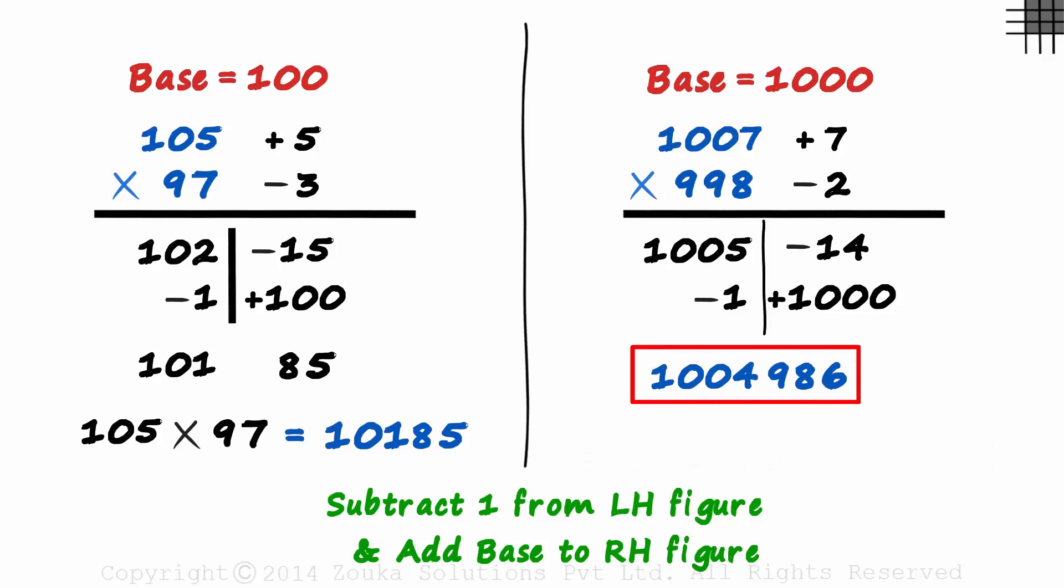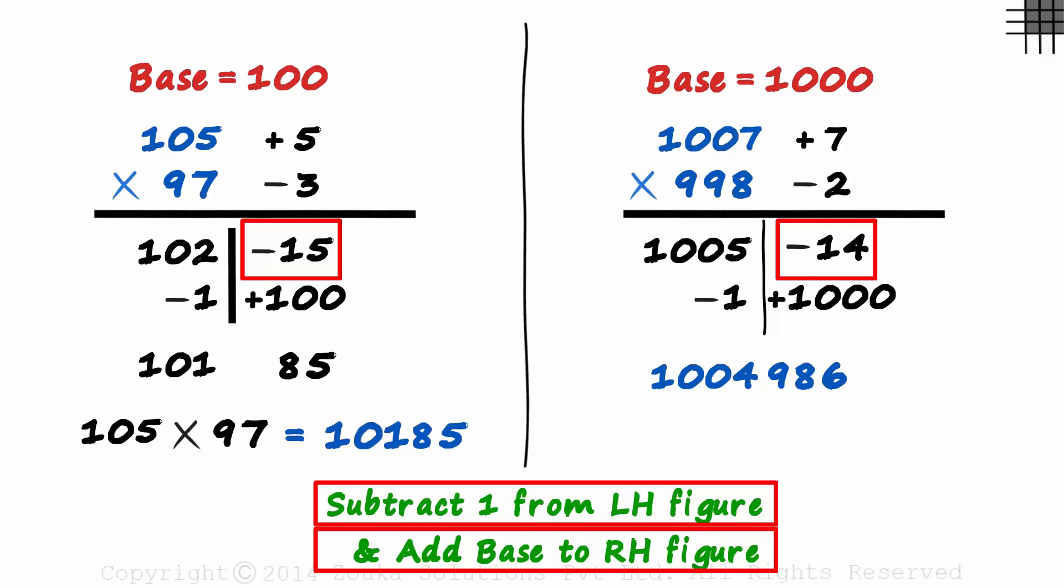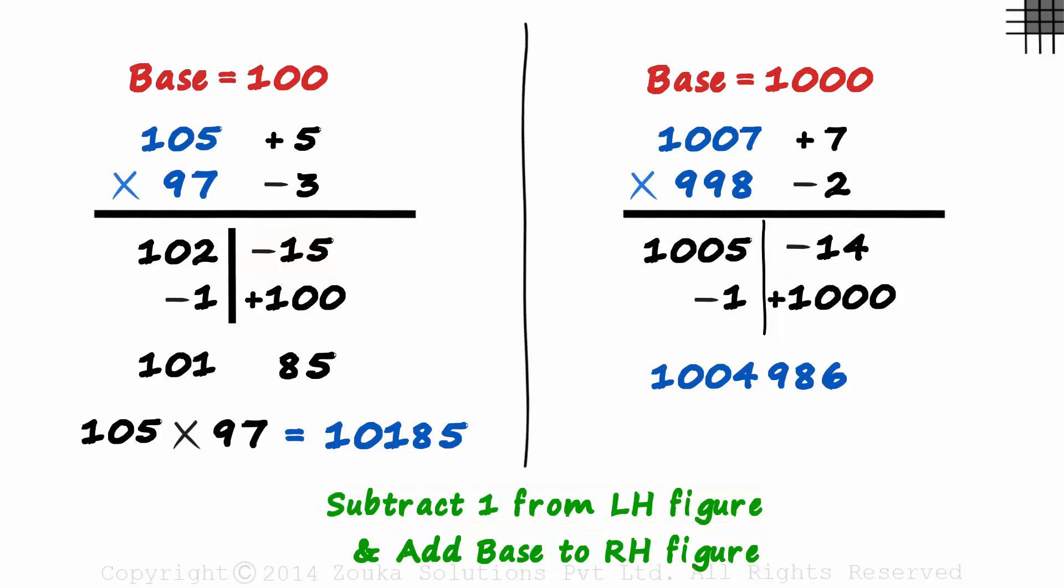Isn't this super quick? With just 4 simple steps, we can multiply huge numbers in a few seconds. So when the figure on the right is negative, remember to use this technique. Subtract 1 from the left and add the base to the right.